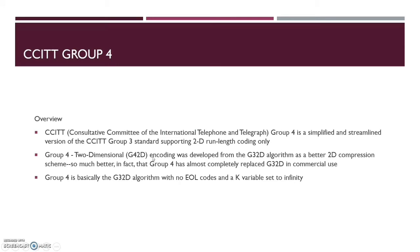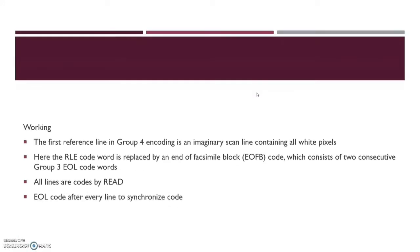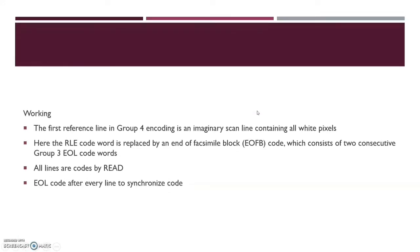Group 4 is also proposed by the same group but is streamlined for only two-dimensional encoding techniques. It uses a combination of the information that Group 3 had for two-dimensional, so it will only use the read encoding technique. While it still uses the start of line with a white pixel, it has replaced the RLE block with the EOFB code so that it can understand two-dimensional encoding.